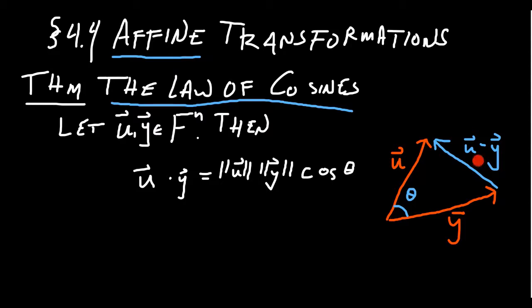If we take this side, u minus v, that is this side right here that's opposite the angle, the length of this side squared will equal the length of this side squared, the length of this side squared. But then we have to subtract from it two times the length of u times the length of v times cosine of theta.